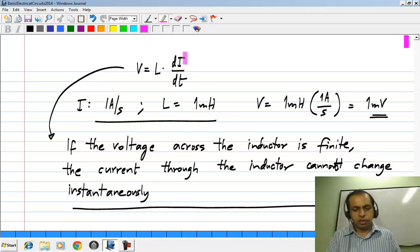Clearly that is apparent from this relationship. If the current changes instantaneously the time derivative is infinity, and the voltage would have to be infinite as well. This is analogous to the voltage in a capacitor, which also cannot change instantaneously if the current through it is finite.